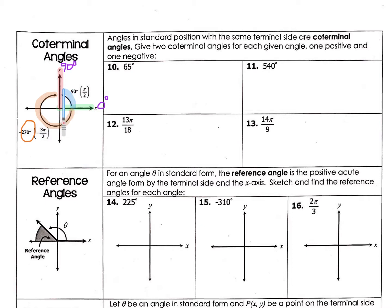I could go from here and continue to go all the way around, which is now 360 and another 90. So 360 plus 90 degrees would count as another coterminal angle. I can just keep adding 360 forever, and so I can keep coming up with an infinite number of positive coterminal angles to 90 degrees.